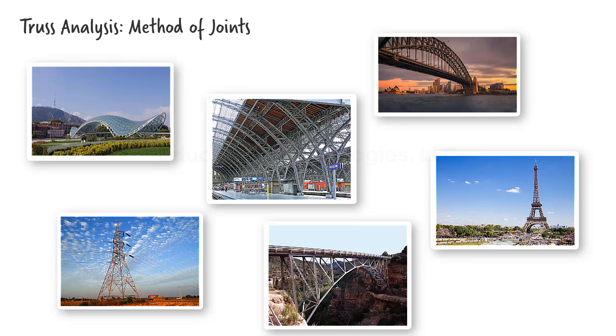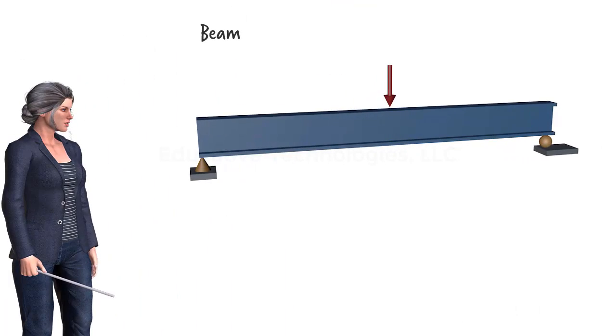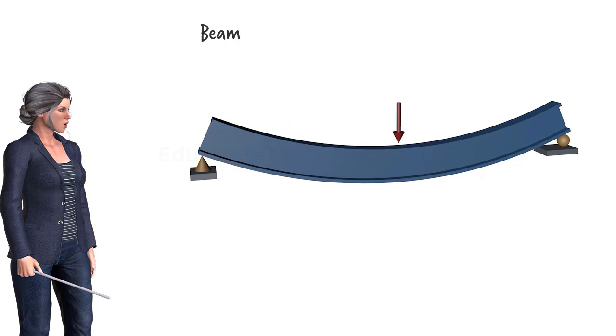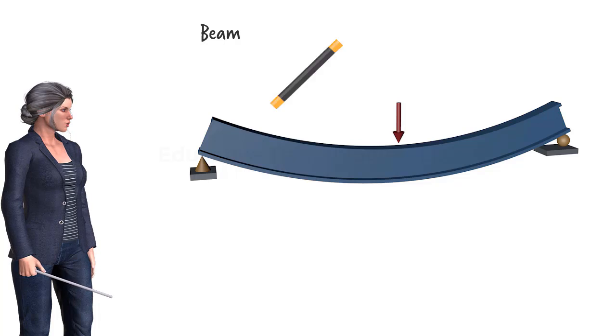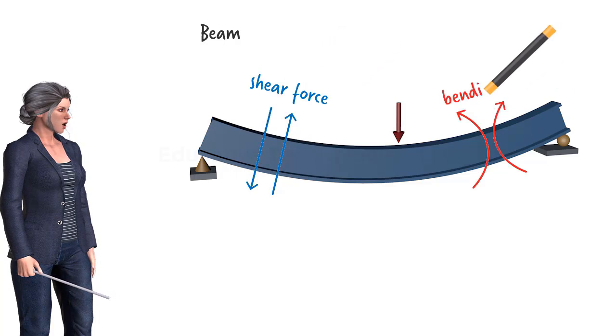We classify a structural system as a truss based on how it responds to the applied loads. For instance, a beam when subjected to a load bends like this, resulting in the development of two internal forces, a shear force and a bending moment.